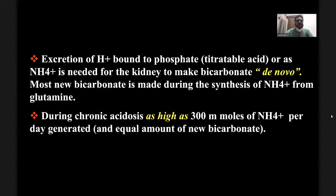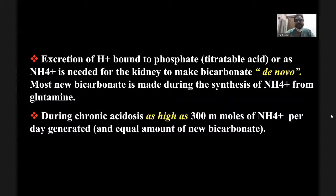The synthesis of ammonium from glutamine is one of the main mechanisms by which the kidney compensates for our daily acid load. When renal failure develops, glutamine synthesis increases. Each glutamine molecule when metabolized in the kidney generates two bicarbonates. During chronic renal failure, you can see as high as 300 millimoles of ammonium developed, which equals an equivalent amount of bicarbonate added from glutamine metabolism.